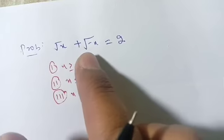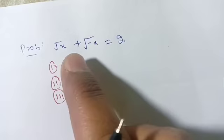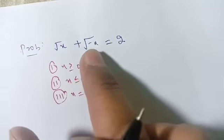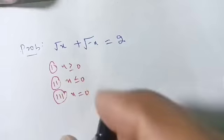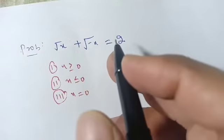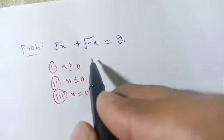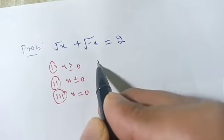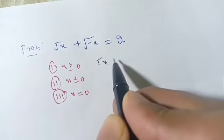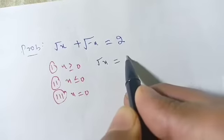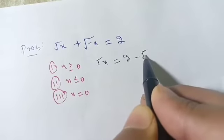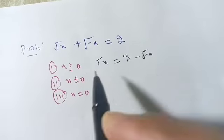The exact value of x we will find by solving this equation. So let's start to solve. We can write it as: square root of x is equal to 2 minus square root of minus of x.